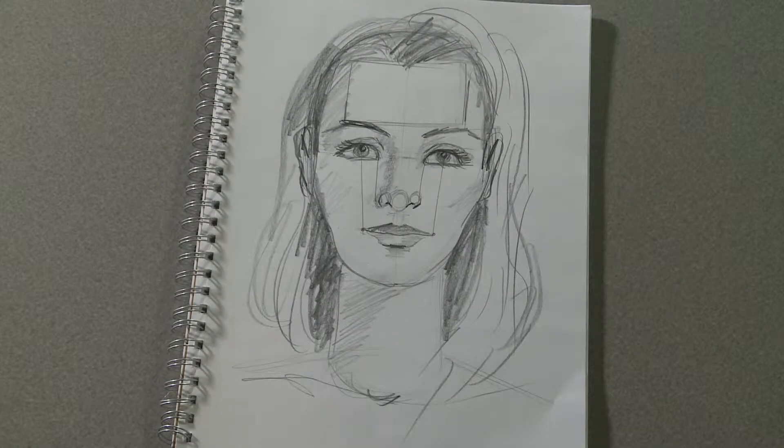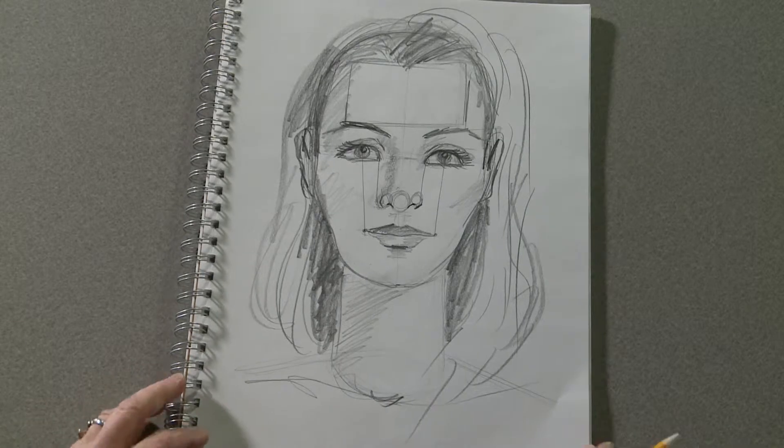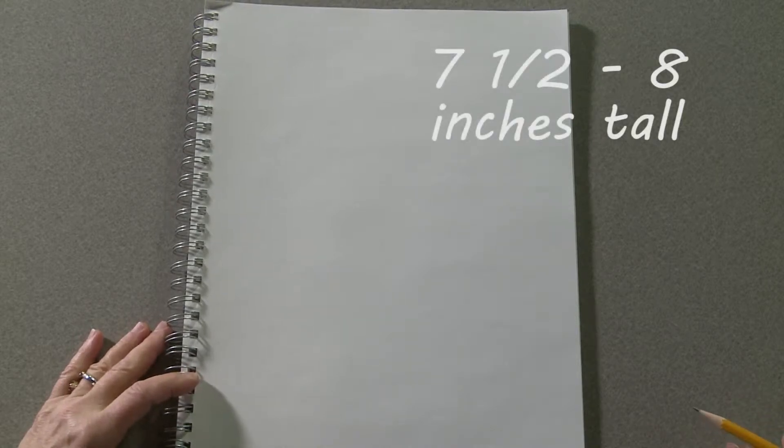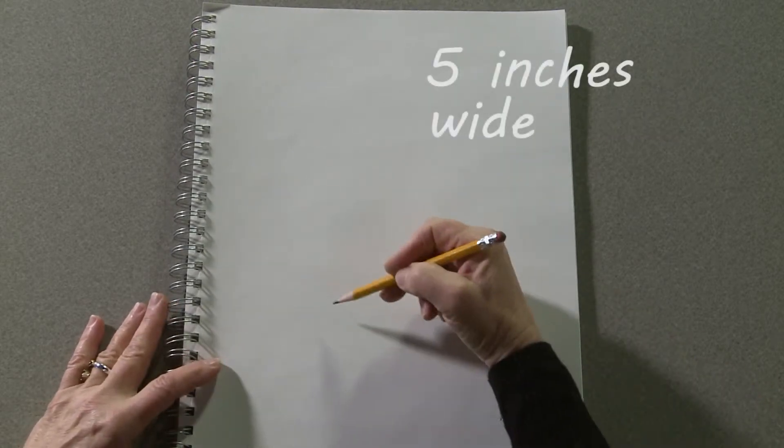In this lesson we're going to draw the fashion head and facial features. Start by drawing an egg roughly seven and a half to eight inches tall and about five inches wide.